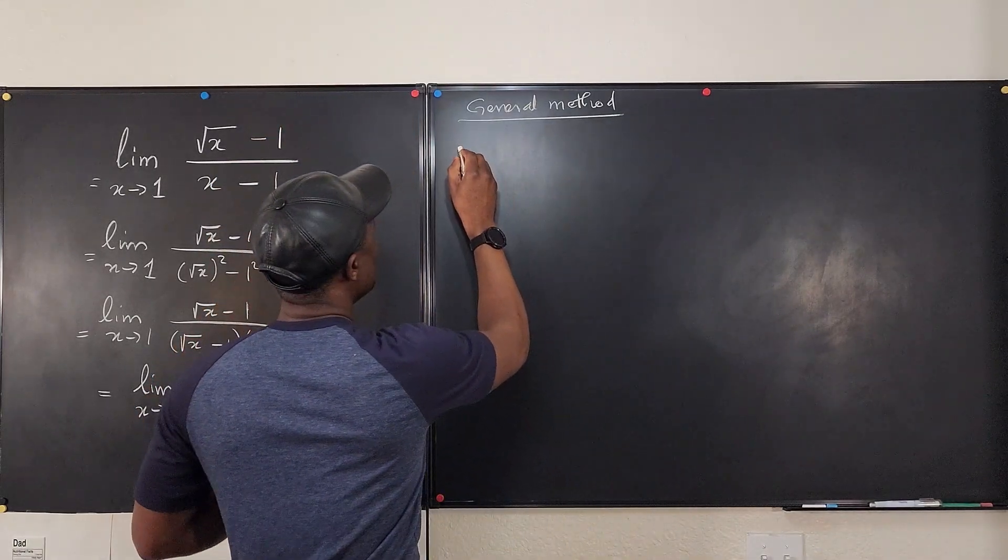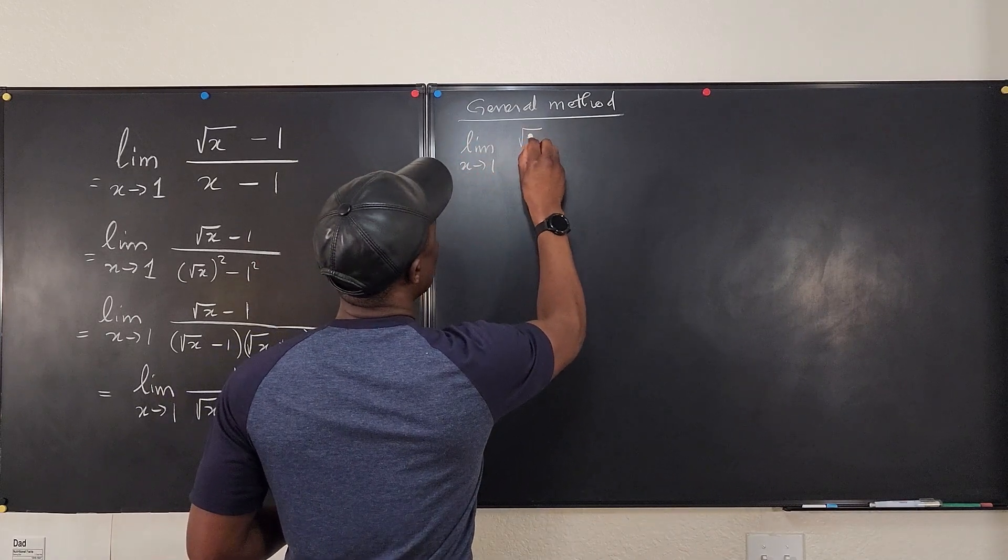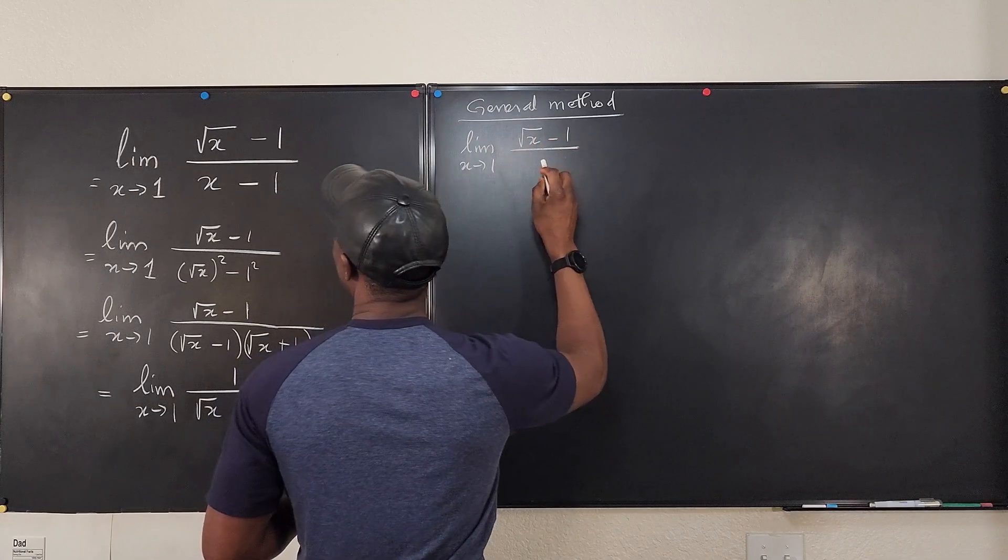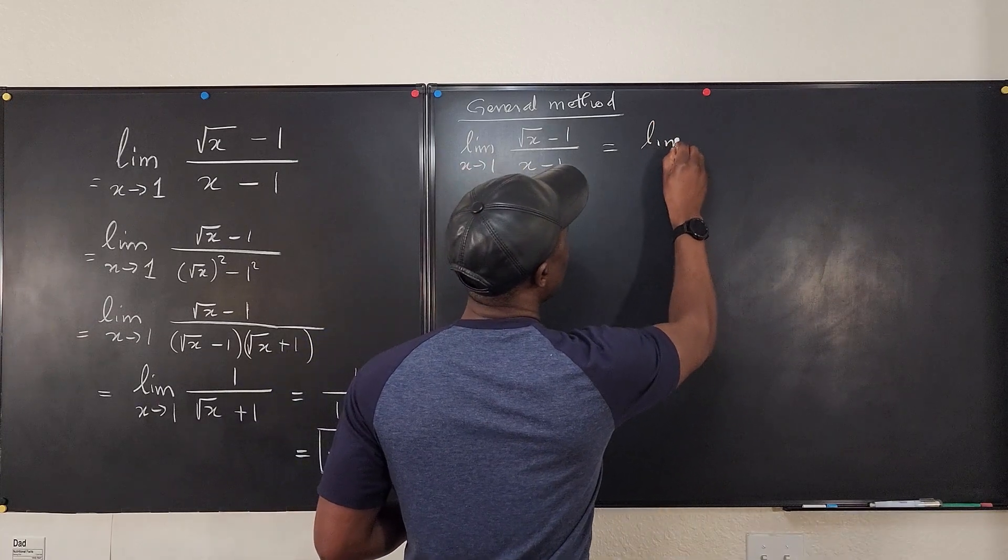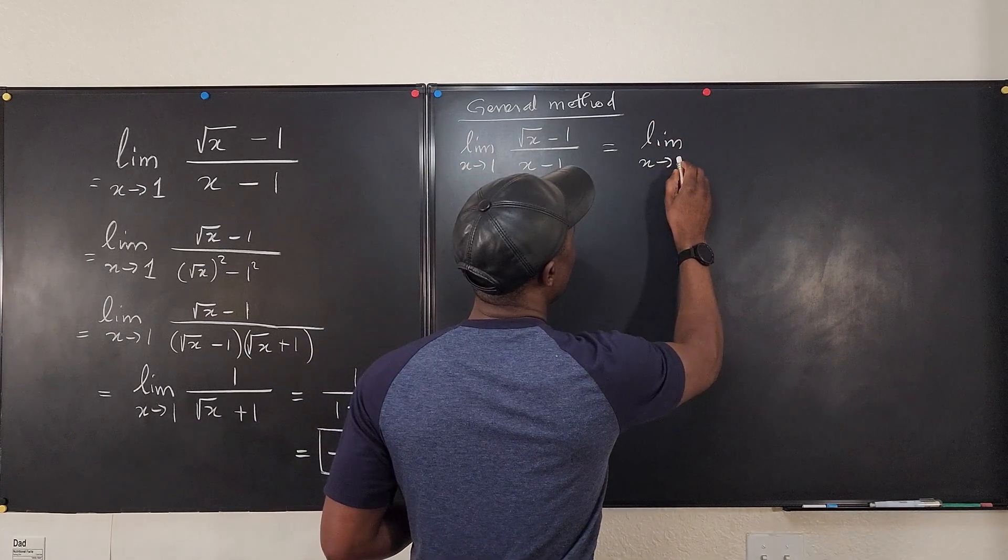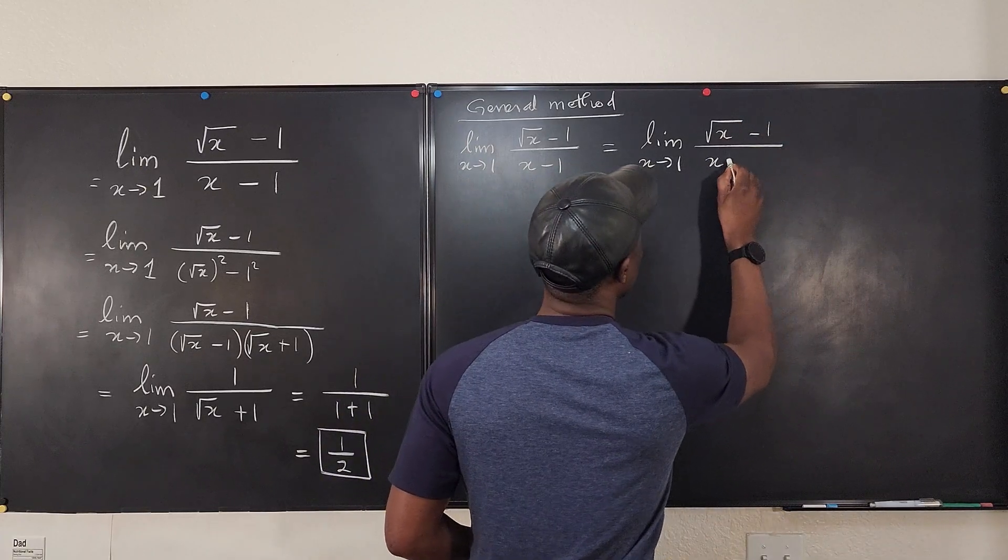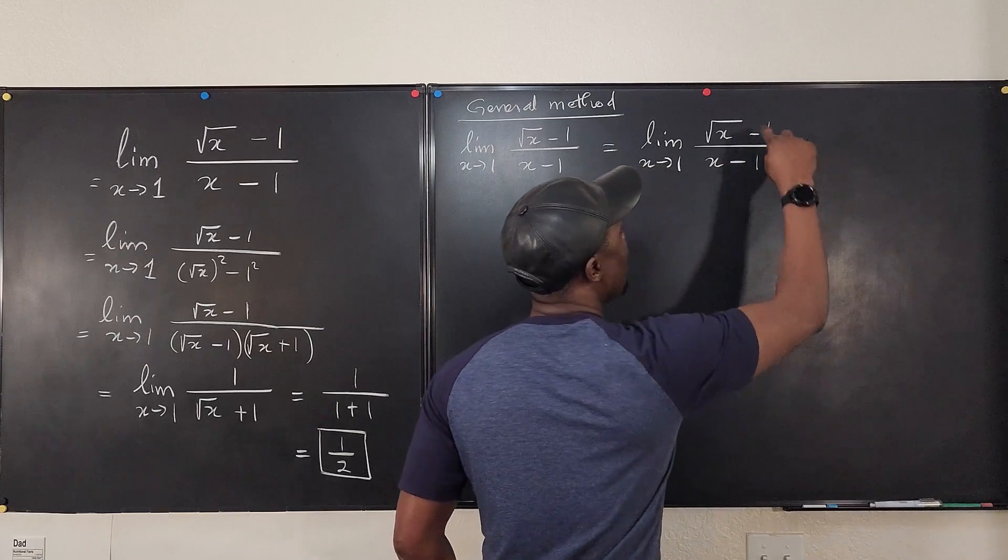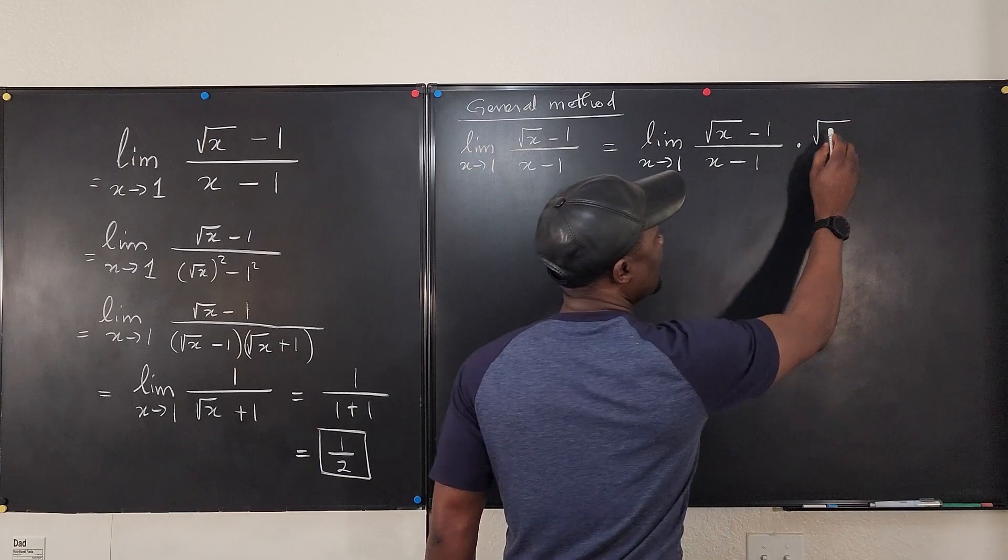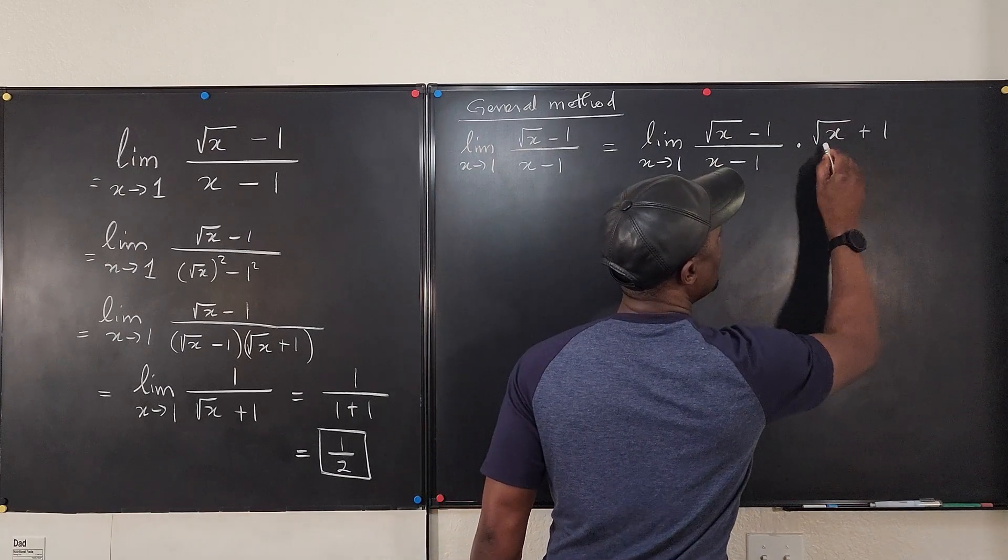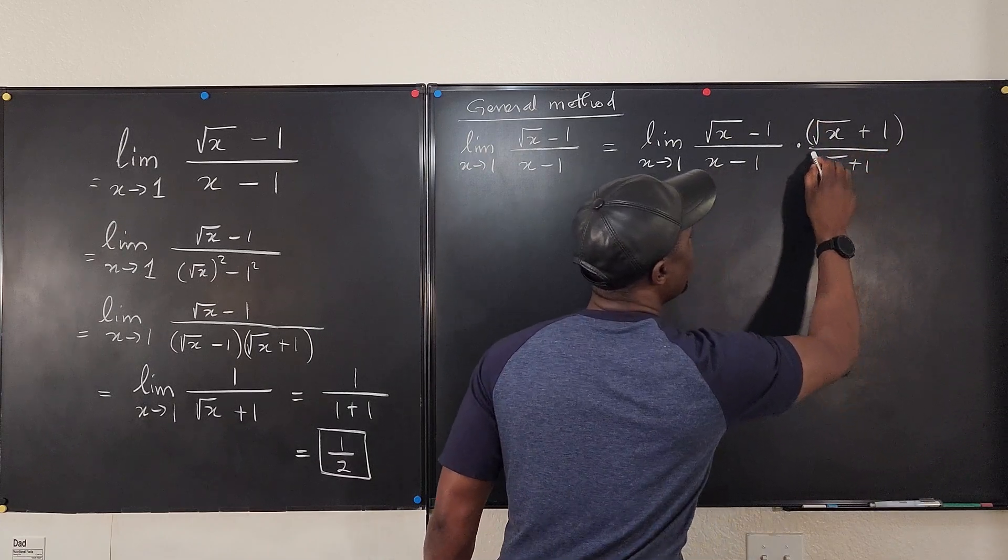So we're going to say this limit as x goes to 1 of the square root of x minus 1 divided by x minus 1 is equal to the same limit as x goes to 1 of the square root of x minus 1 over x minus 1 multiplied by the conjugate of whatever has the radical. So square root of x plus 1 divided by square root of x plus 1. So we're multiplying here.